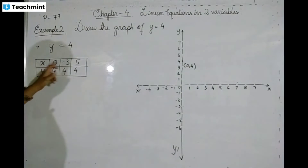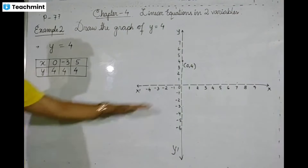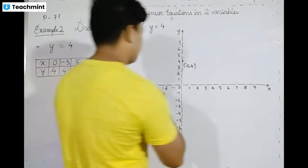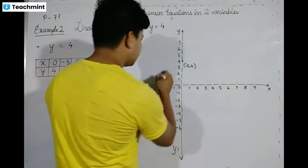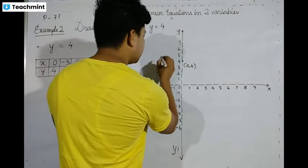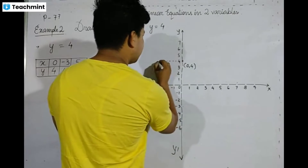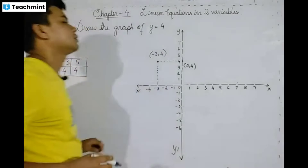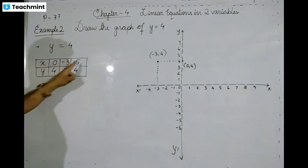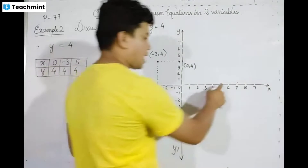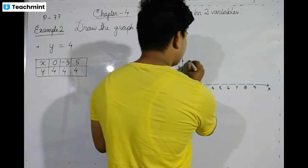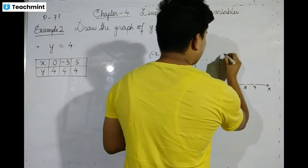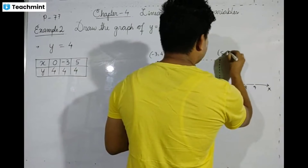Next, we have x values: when x minus 3 is equal to 4, that means x equals 4. Then x minus 5 is equal to 4, so that means x minus 5 is equal to 4.